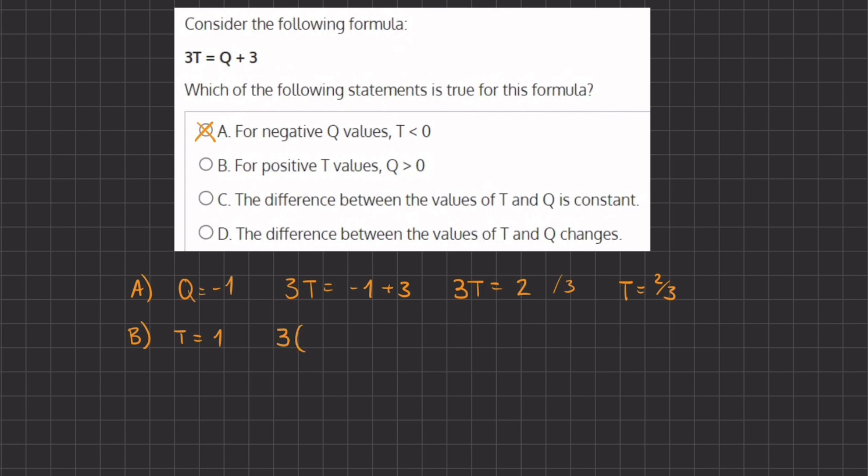And we'll see this by plugging in 1 for T. So we have 3 times 1 = Q + 3. Now if we isolate Q, we'll subtract 3 on both sides. And we get that Q = 0, which is not a positive value,